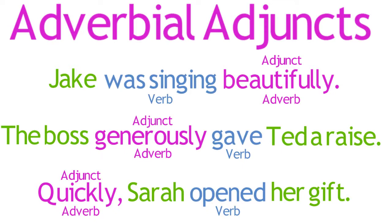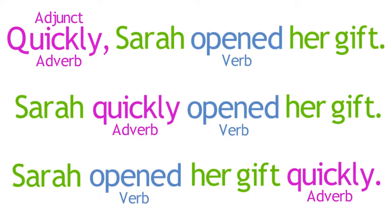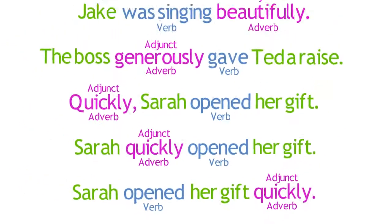such as the subject, the verb, and the direct object. Notice that each of these three adverbial adjuncts appears in a different position in the sentence relative to the subject and verb. In fact, an adverbial adjunct can often appear in a variety of positions within a single sentence, as these three examples illustrate.